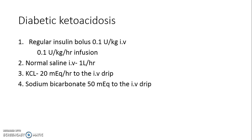Because there is fluid and electrolyte depletion, we need to replace it by giving normal saline intravenously at the rate of 1 litre per hour. If hypokalemia occurs — which may happen when ketosis subsides and potassium gets internalized into cells — potassium chloride may need to be given at 20 milliequivalents per hour via IV drip.